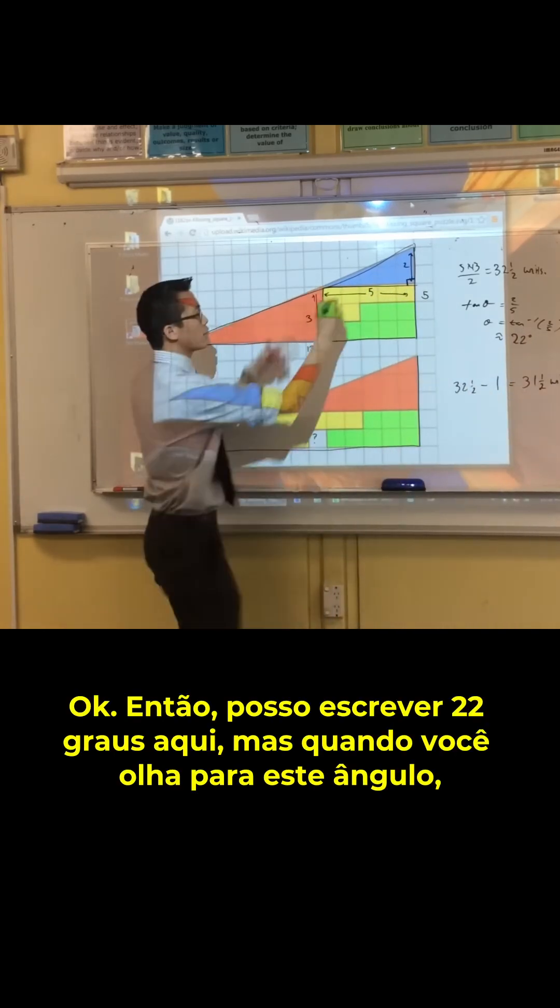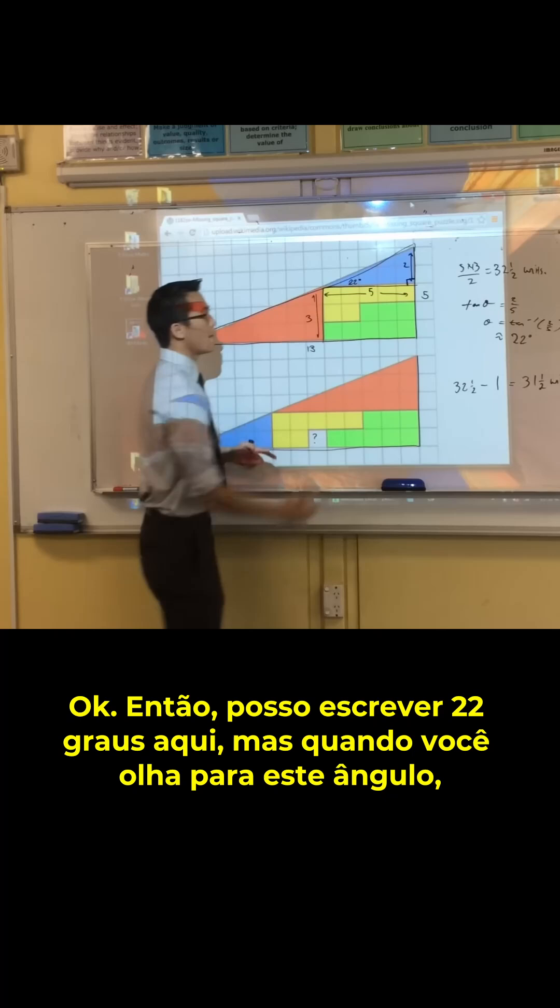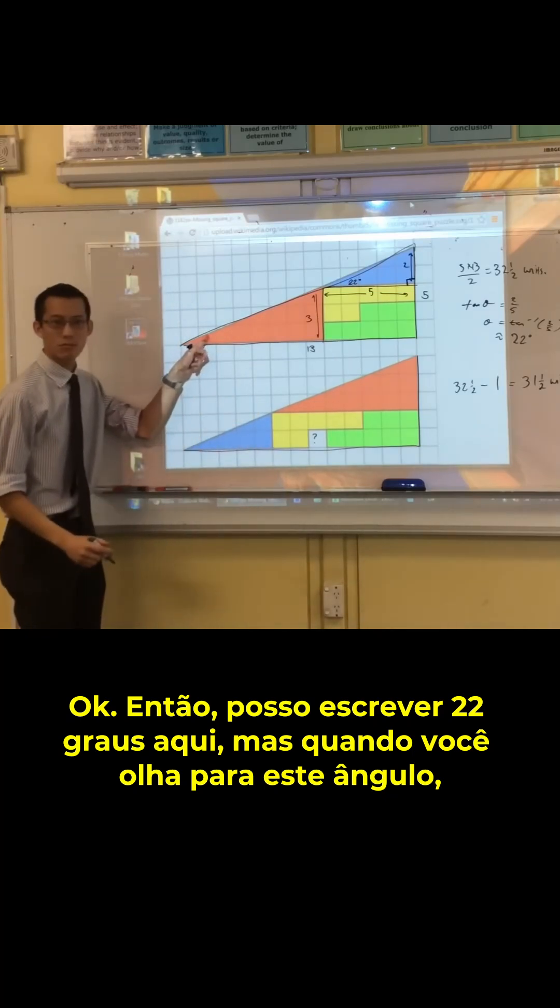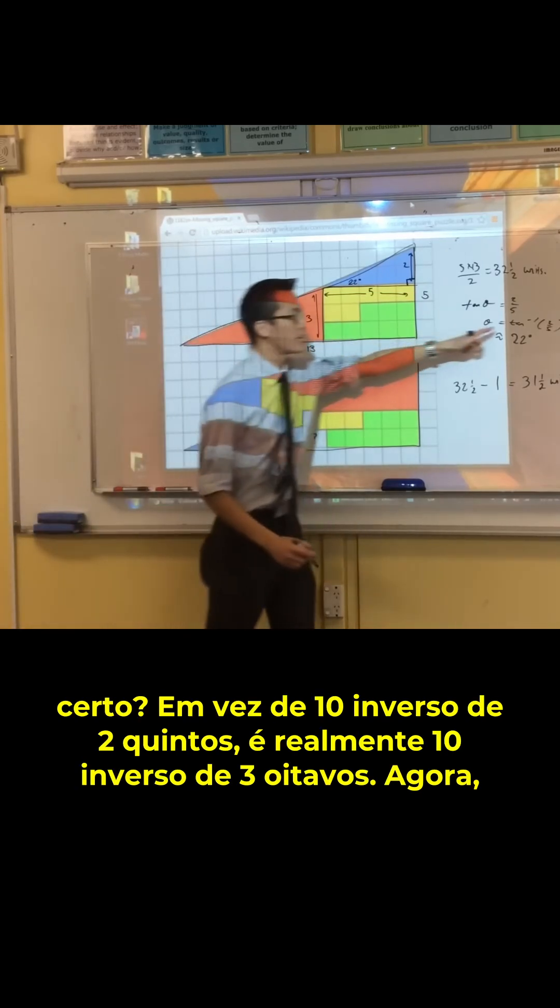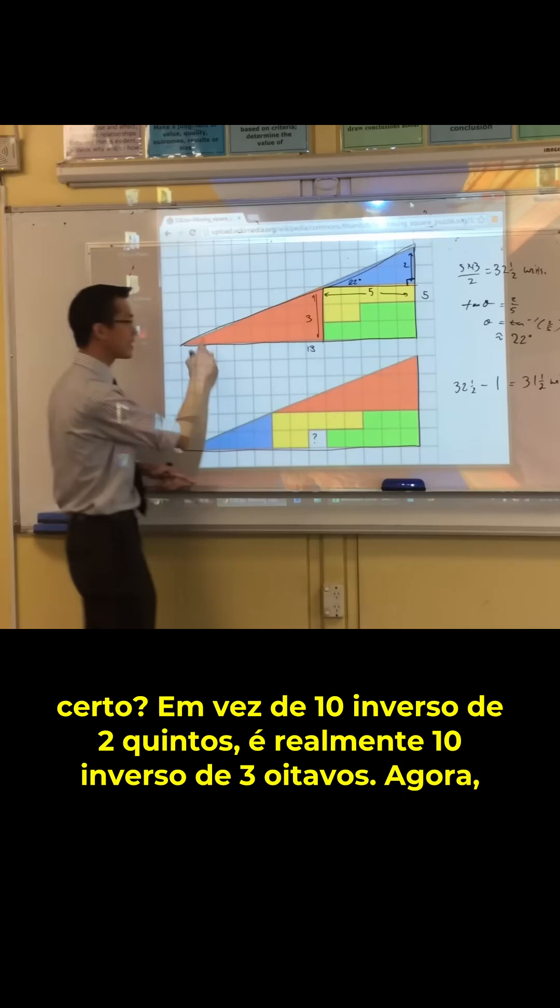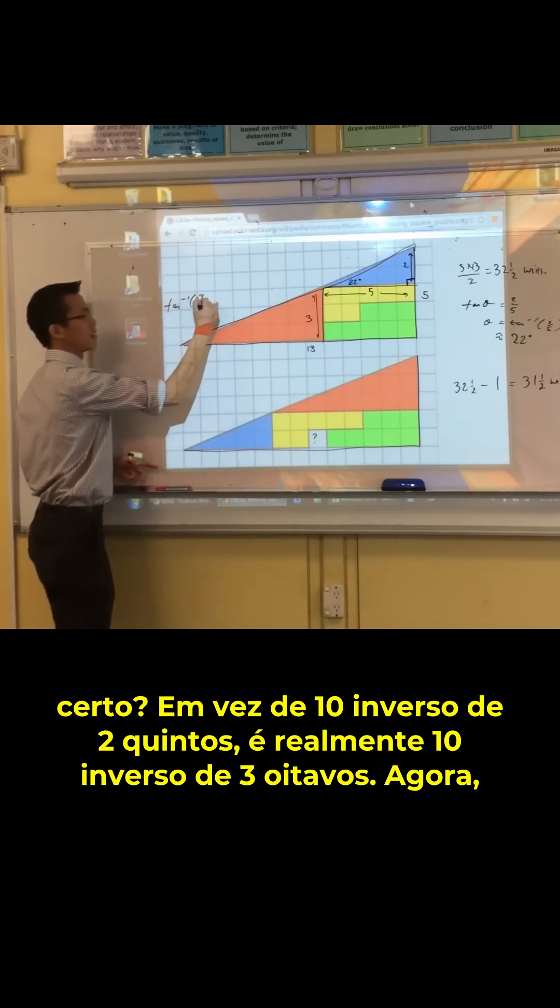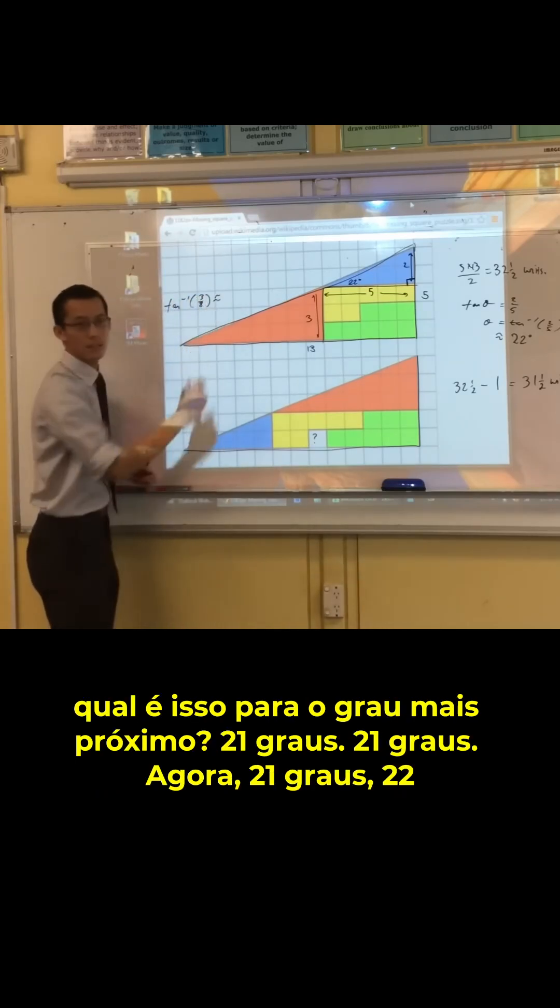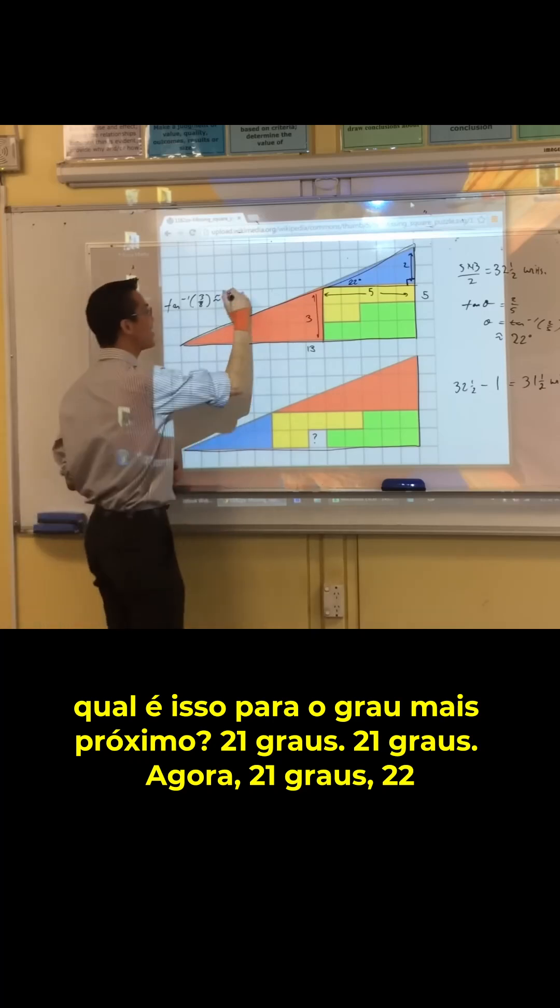Okay, so I can write 22 degrees up here, but when you have a look at this angle, right, instead of tan inverse of 2 fifths, it's really tan inverse of 3 eighths. Now, what's that to the nearest degree? 21 degrees. 21 degrees.